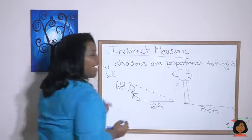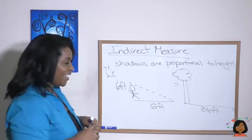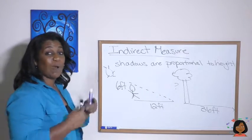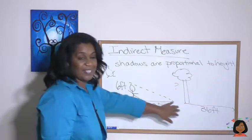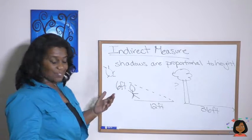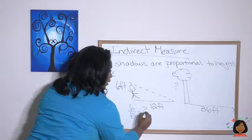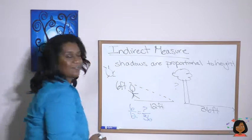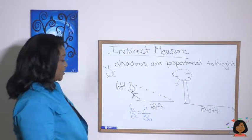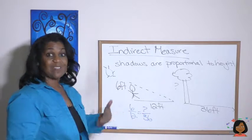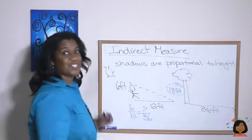Are we able to figure out — or at least estimate — how tall this tree is? Yes, we can. We're going to use what we know about proportions to set this up. Six is to this question mark as 12 is to 36. So let's set up our proportion: six over 12 equals question mark over 36. 12 times what is 36? 12 times three is 36. Six times three is 18. So that tells us that our tree is 18 feet tall.